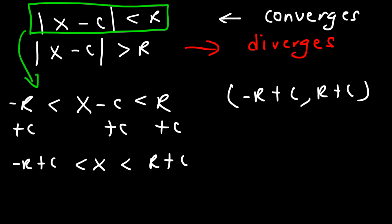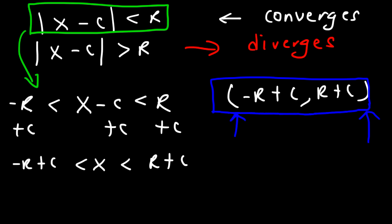The last thing you need to do is check the endpoints, because sometimes you could have two brackets, two parentheses, a bracket and a parenthesis, or a parenthesis and a bracket — four possibilities. You have to check your endpoints, which I'll show by example. That's how you find the interval of convergence. Now you know the three scenarios, so let's work on some practice problems.